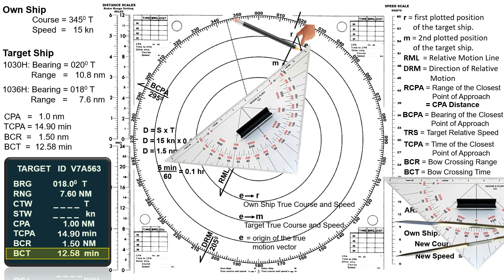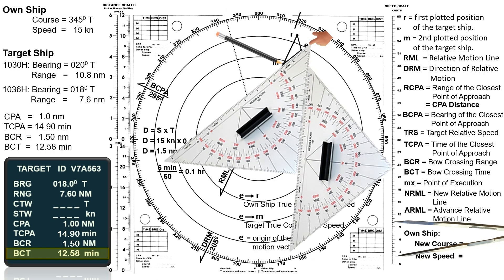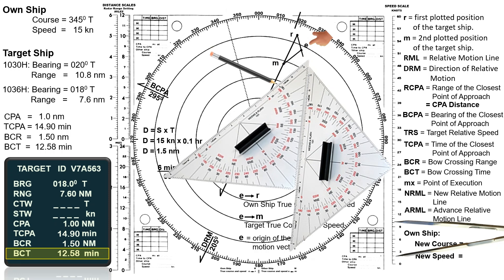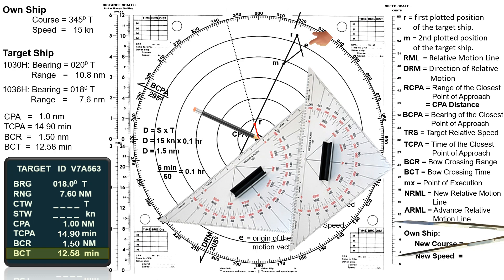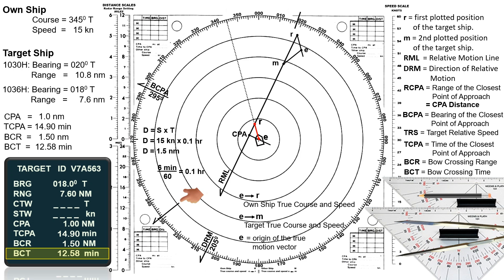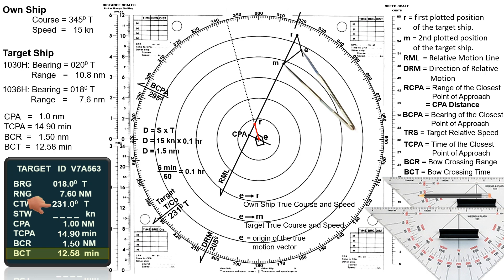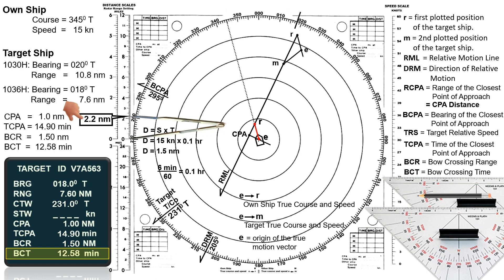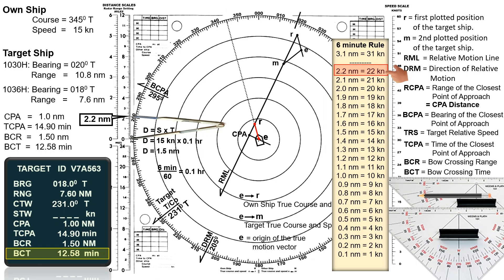Next, connect a line from point E to M. This line is the target's true vector, representing the target's true course and speed — forming our vector triangle. To determine the target's true course, bring the triangle to the center of the plotting sheet and measure the direction of line E to M. The target's true course is 231 degrees. Measuring the distance from E to M on the 12-mile range scale gives 2.2 nautical miles.